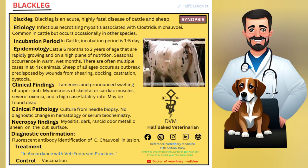Clinical findings include lameness and pronounced swelling of the upper limb, myonecrosis of skeletal or cardiac muscles, severe toxemia, and a high case fatality rate. Animals may be found dead.